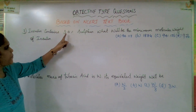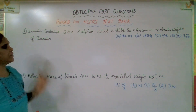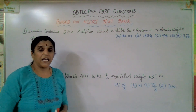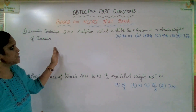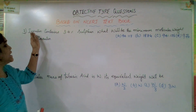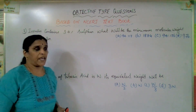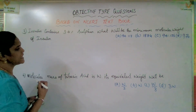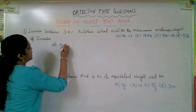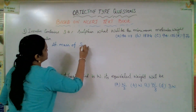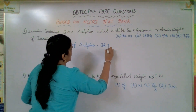The next question. Insulin contains 3.4 percent of sulphur. What will be the minimum molecular weight of insulin? They have given the option. In this question they did not provide the molecular weight of insulin, but they have given that insulin contains 3.4 percent of sulphur. The atomic mass of sulphur is 32 gram per mole.